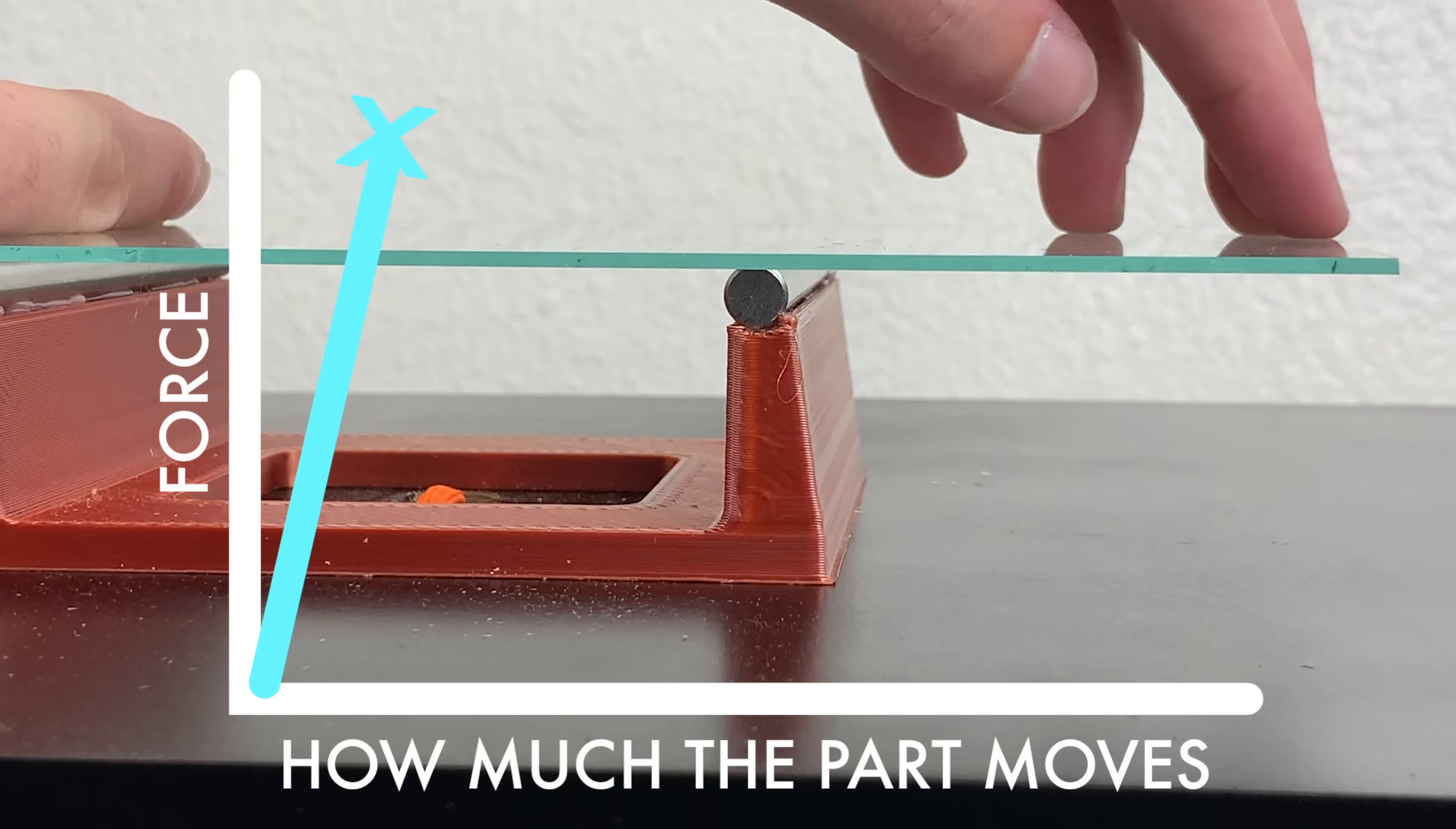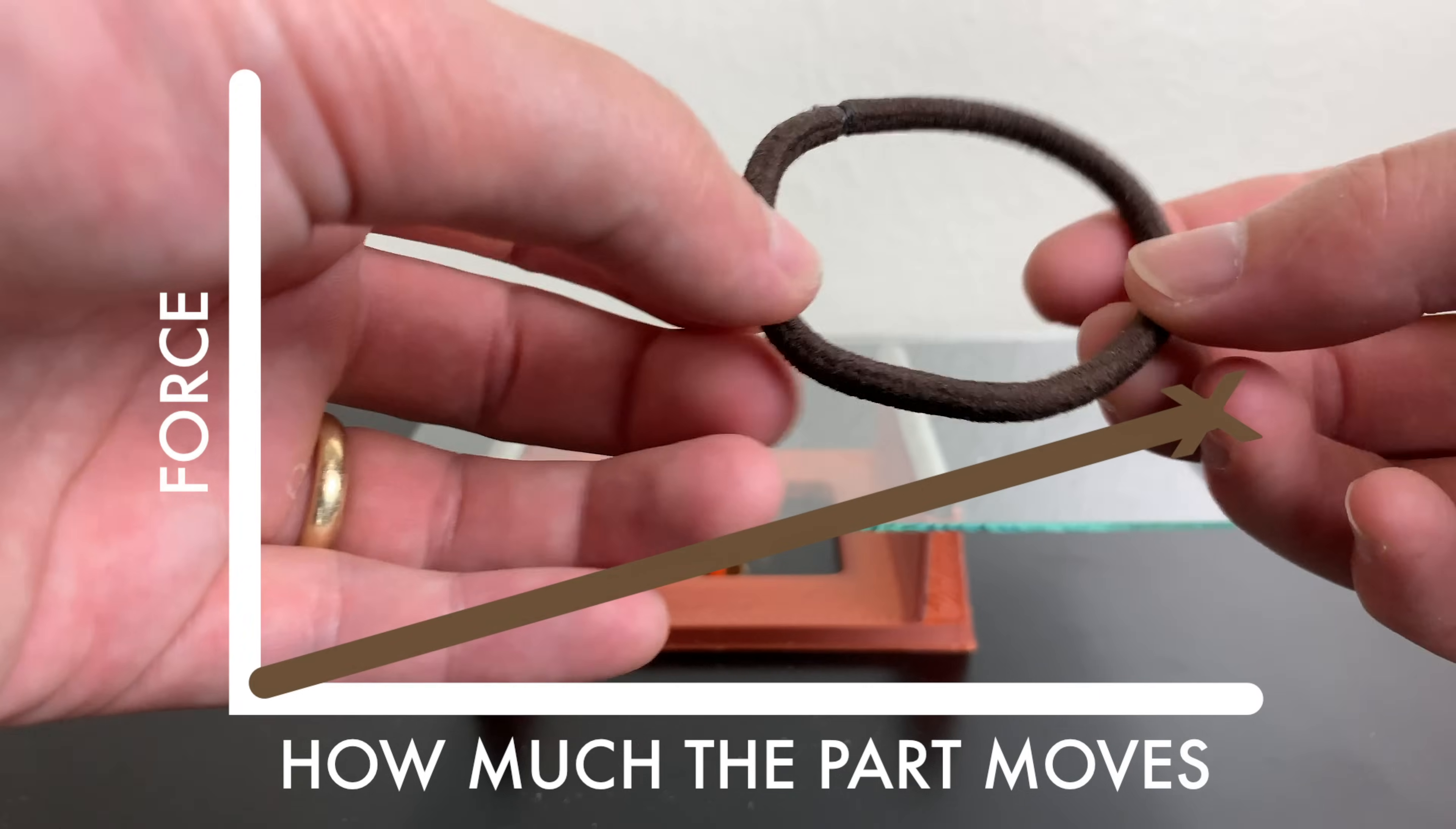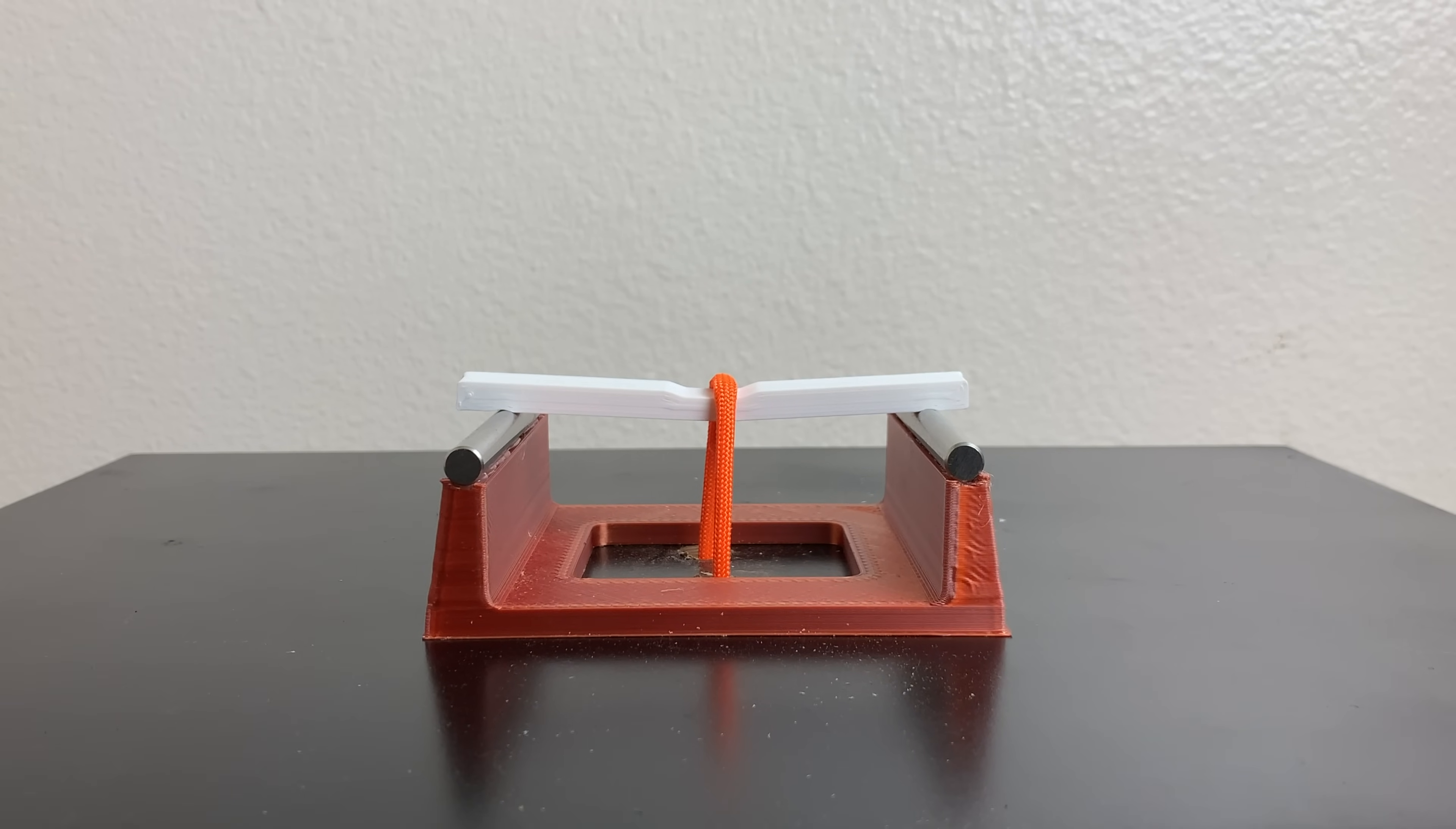This is what the graph for glass would look like. You can see that once you reach a certain amount of force, the part just breaks and it doesn't bend at all. The graph for the rubber band would look like this. For a small amount of force, the object is able to stretch or move a lot, but it's always able to snap back into its position and that's the definition of an elastic material.